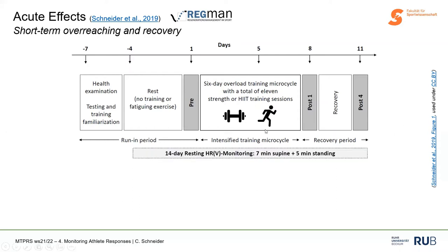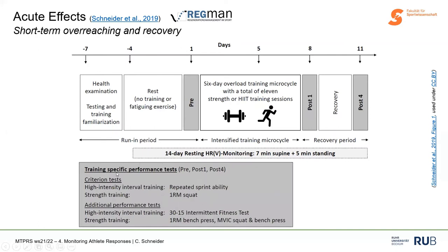Among the measures, my focus was on resting heart rate and heart rate variability. We collected these for 14 days every morning during a supine recording and a standing recording — an orthostatic test. Performance was always defined with the training-specific performance test at pre-testing, post-testing right after training, and after recovery. The criterion test for high-intensity interval training was a repeated sprint ability test. For strength training, it was the one-repetition maximum in a back squat.